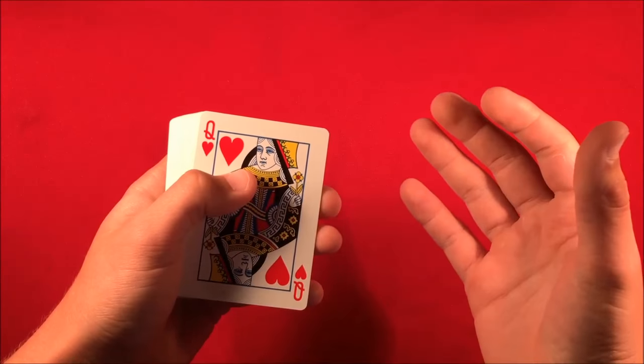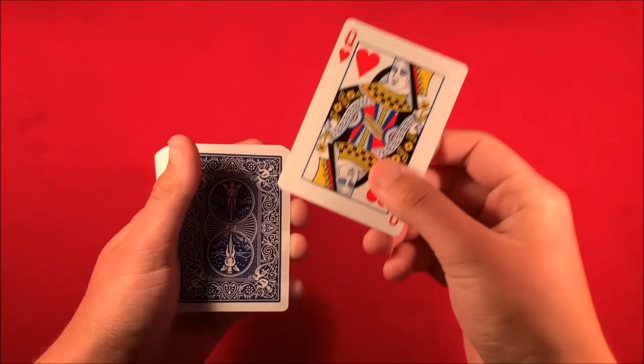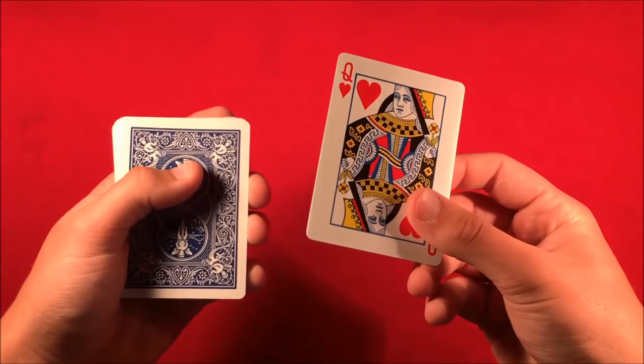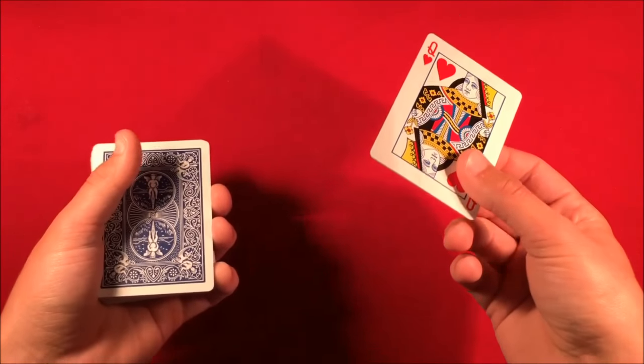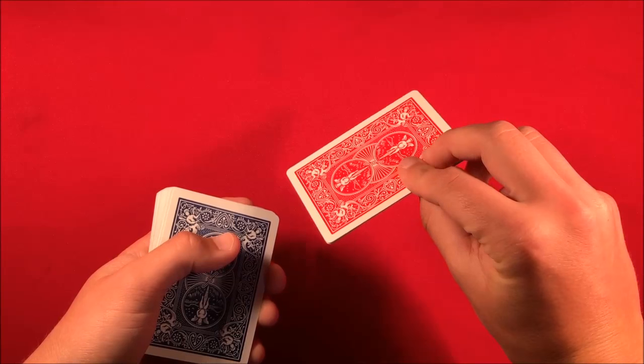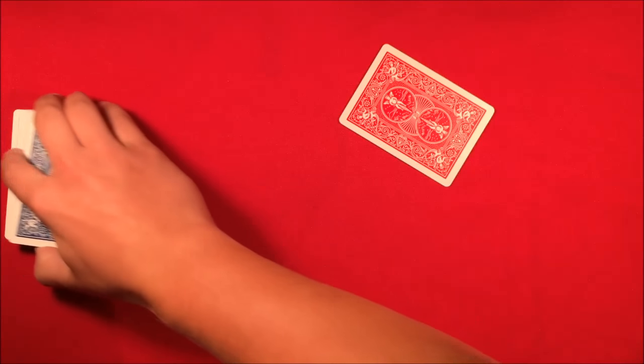So anyways, at this point, the double-stick tape should have worked now and you should have that red-backed new card. So you don't really show it right now. You just kind of let the spectator know that they picked any card, it was free of choice. And then you can reveal the back to them because you can say, look, this is the only red-backed card in the entire deck.